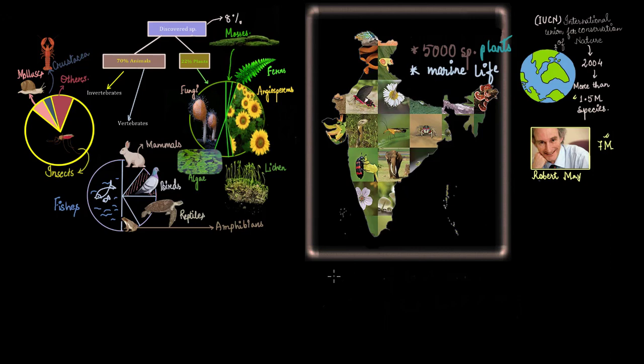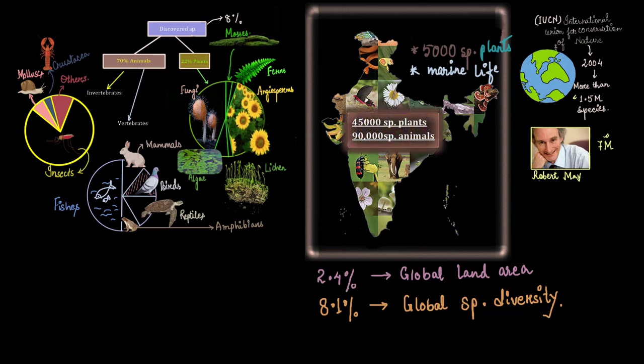If we talk about the total land area, India constitutes just 2.4% of the total land area of this earth. And despite its small land area, a whopping 8.1% of total global species diversity call India their home. Wonderful. Let's talk about the discovered and documented species of India. When it comes to plants, we have around 45,000 species discovered and described from India. And when it comes to animals, our country has documented around 90,000 different species. How wonderful is that?